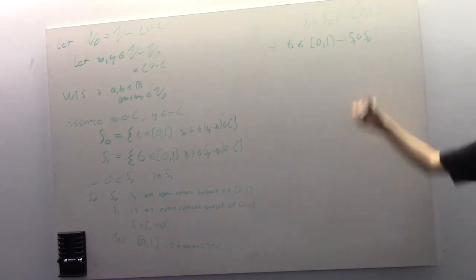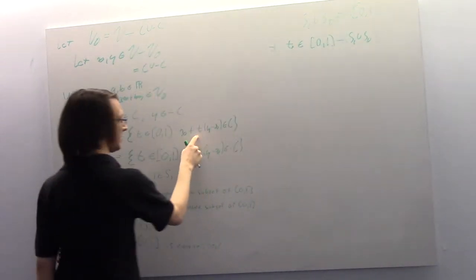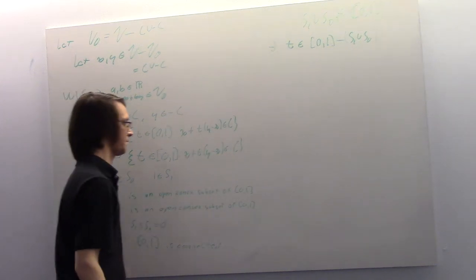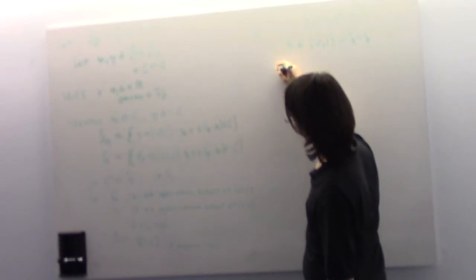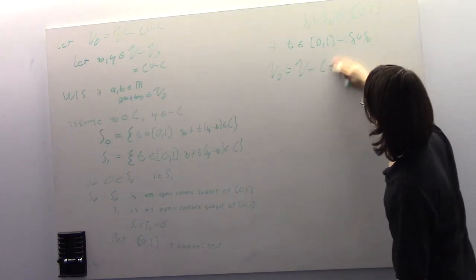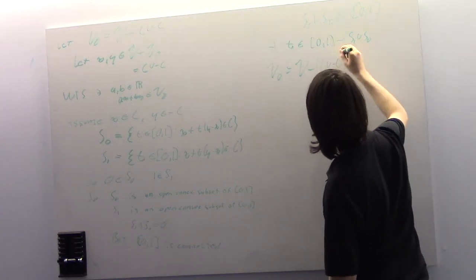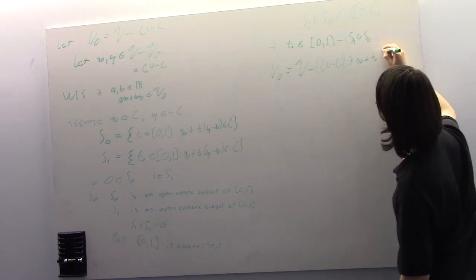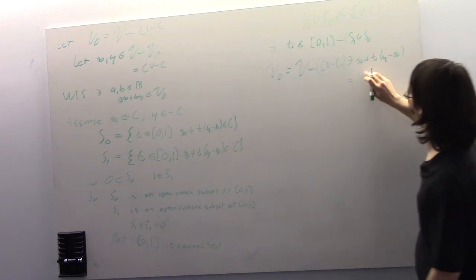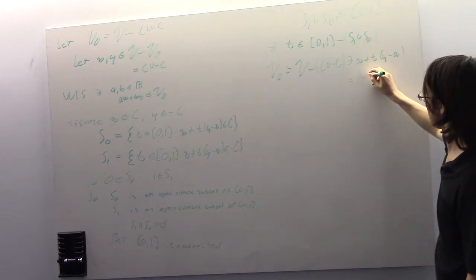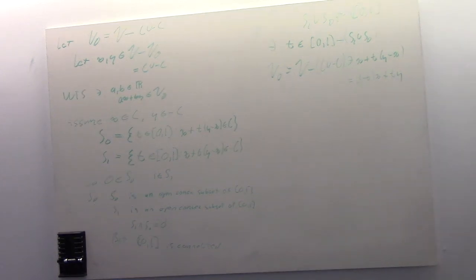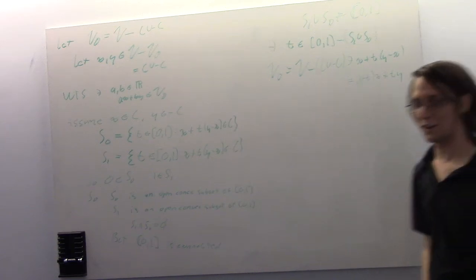If T is not in either of these sets, it means X plus T(Y minus X) is not in C and not in minus C. So V-naught — which equals V minus (C union minus C) — contains X plus T(Y minus X). We can rewrite that as (1 minus T)X plus TY, which is an element of V-naught. This is exactly what we wanted: V-naught is codimension one.